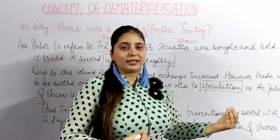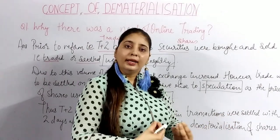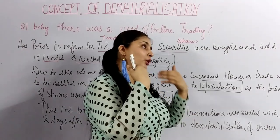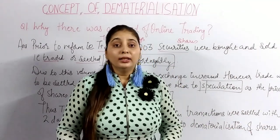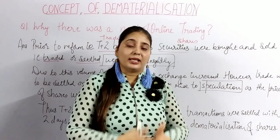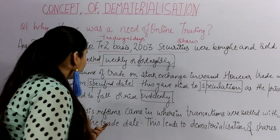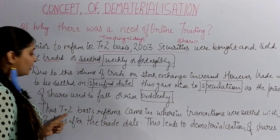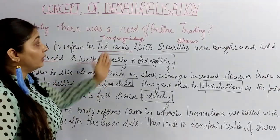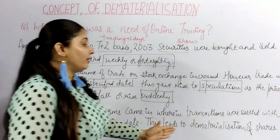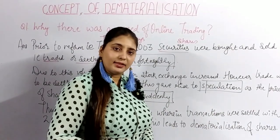Whenever a sale or purchase was agreed between two investors — one investor sold their security and the other purchased it — once the trade was settled, the final settlement of cash had to be made within 2 days. And because of this online trading, dematerialization of shares came into existence.